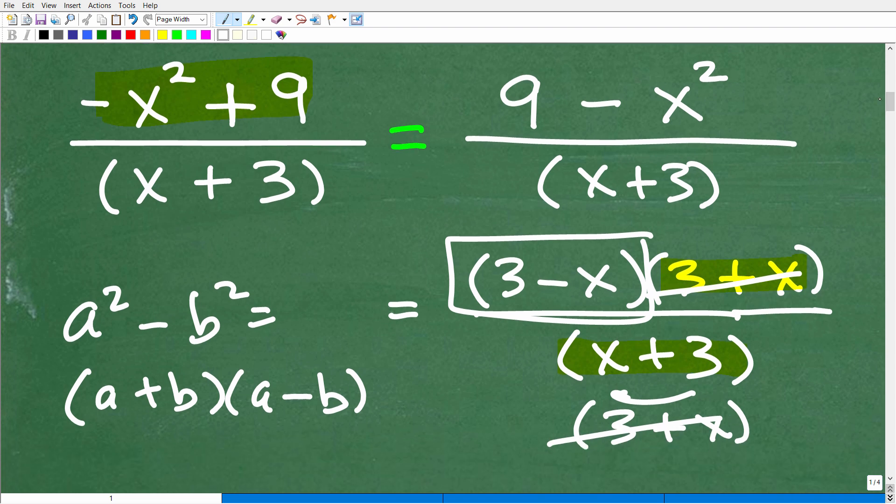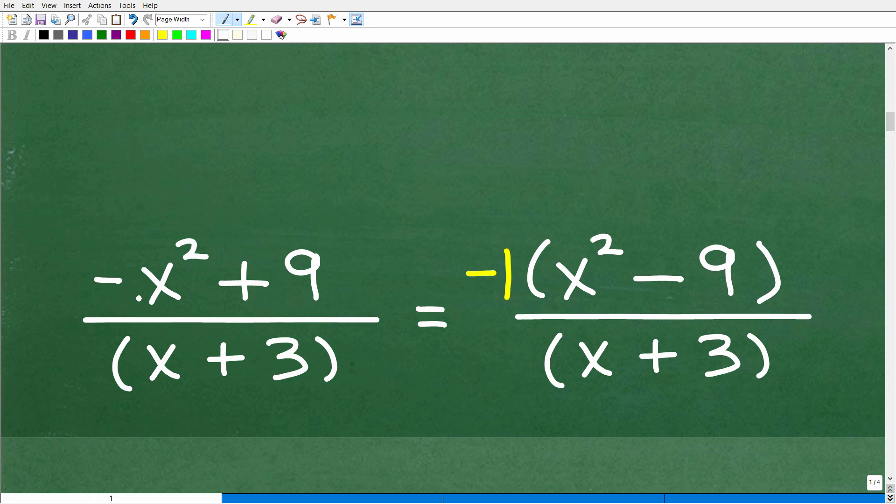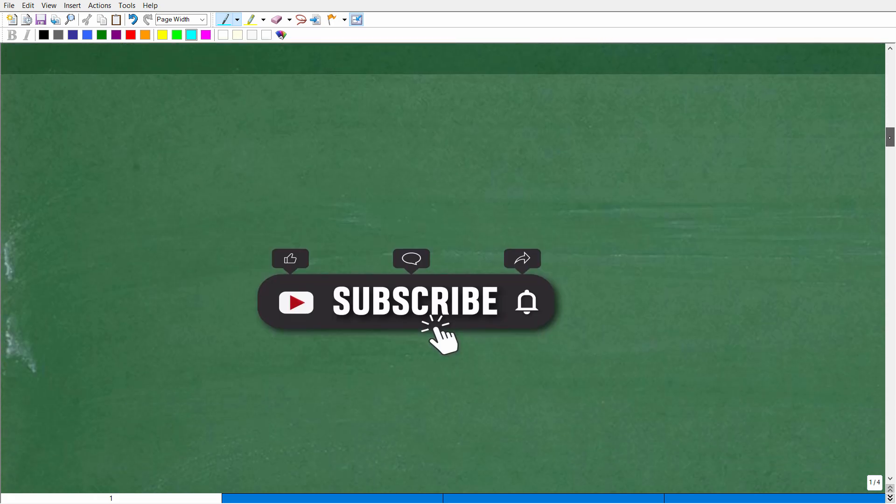Let's take a look at another way that we can factor this, and that is by factoring out a negative 1. This is definitely a trick you want to keep in mind. Here I have negative x squared plus 9. If I factor out a negative 1 in the numerator, if I multiply negative 1 back in, negative 1 times x squared gets me negative x squared. Negative 1 times this negative 9 gets me positive 9. What's the advantage of doing this? Well, here I do have this lovely difference of two squares: x squared minus 9 over x plus 3.